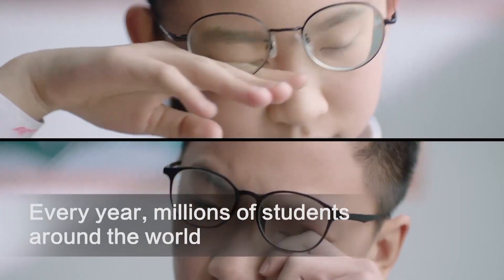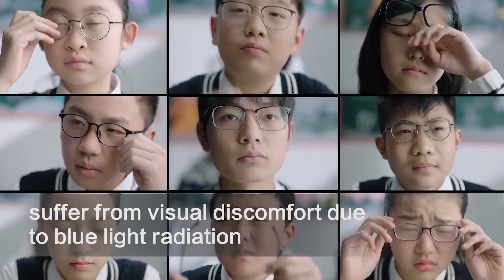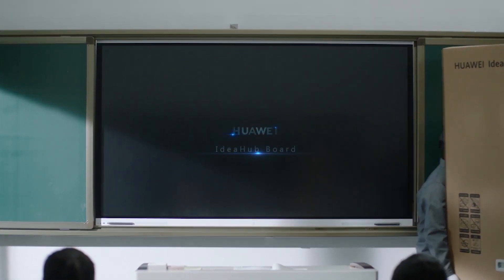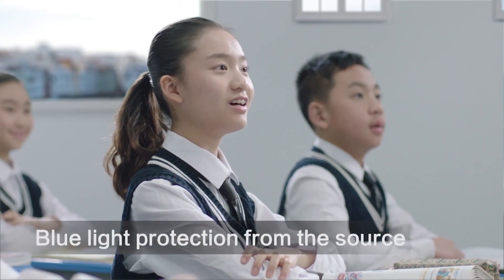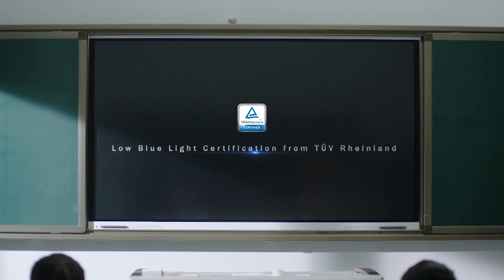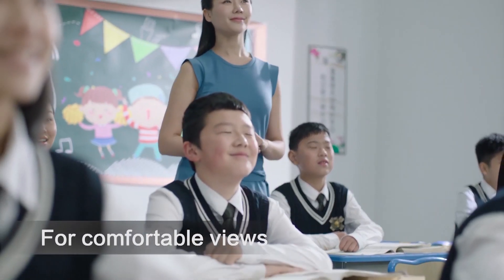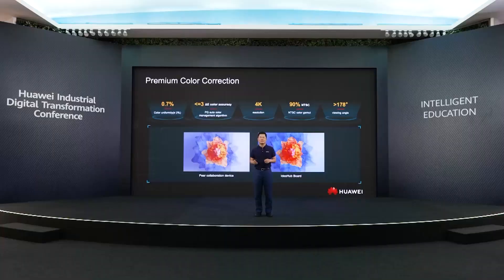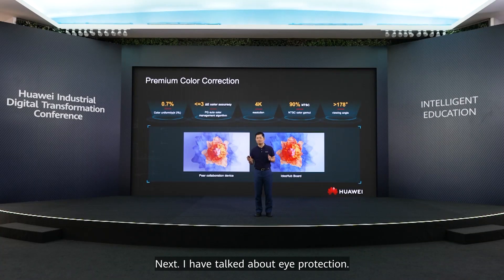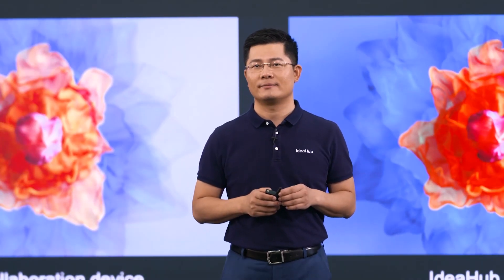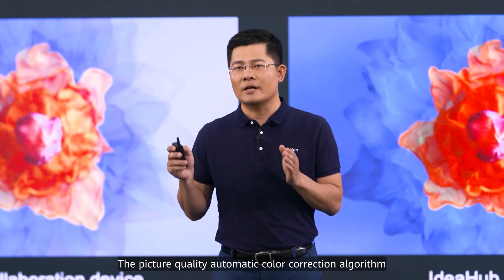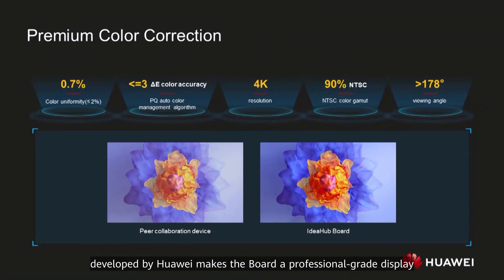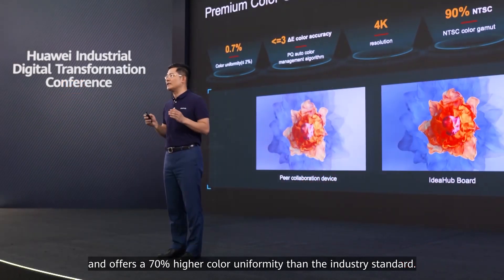To demonstrate this, let's watch a video. The IdeaHub Board uses optical anti-blue light technology — blue light protection from the source — with blue light certification for comfortable viewing. The picture quality auto-color calibration algorithm developed by Huawei makes the board a professional-grade display and offers 70% higher color uniformity than the industry standard.